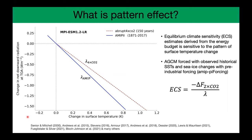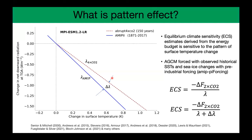Differences in surface warming pattern influence the climate feedback strength — for example, the cloud and lapse-rate feedbacks — and in turn the ECS estimates. This dependency of the ECS estimates on the pattern of surface warming is termed the pattern effect. One way to estimate this pattern effect is by forcing atmosphere-only GCMs with observed historical SSTs and sea ice changes with pre-industrial forcing. If different SST data sets are applied to the models, you might get different estimates of the pattern effect.